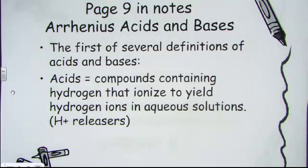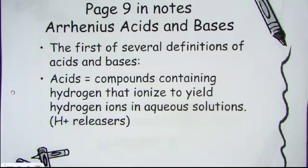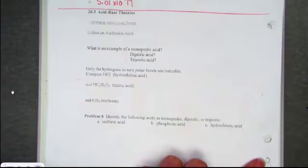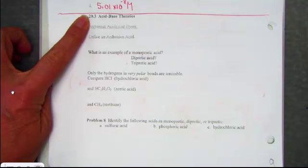We're now ready to start discussing the theories of acids and bases in terms of some definitions. There are actually three competing definitions: Arrhenius, the Bronsted-Lowry, and the Lewis theory of acids and bases. The scope of this particular course will discuss the first two, the Arrhenius theory and the Bronsted-Lowry theory. In our note pack, we have it open to page 9, section 20-3, acids and bases in different theories.